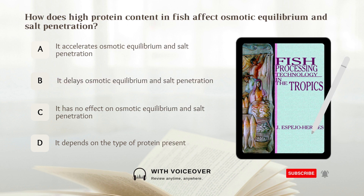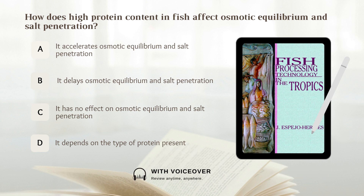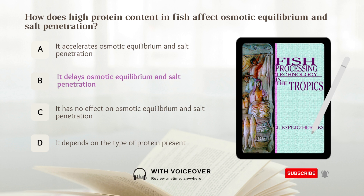How does high protein content in fish affect osmotic equilibrium and salt penetration? A. It accelerates osmotic equilibrium and salt penetration. B. It delays osmotic equilibrium and salt penetration. C. It has no effect on osmotic equilibrium and salt penetration. D. It depends on the type of protein present. Answer: B. It delays osmotic equilibrium and salt penetration.